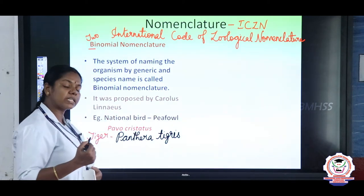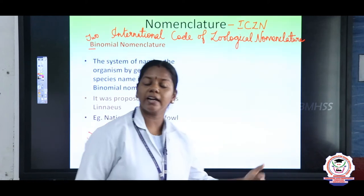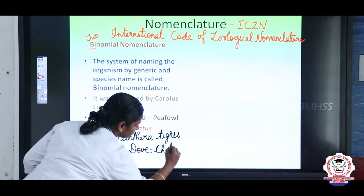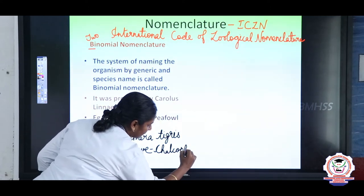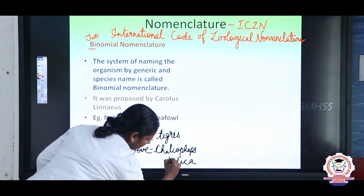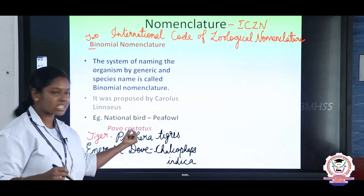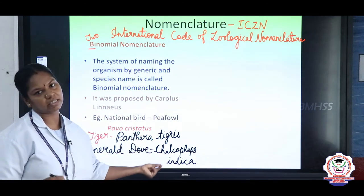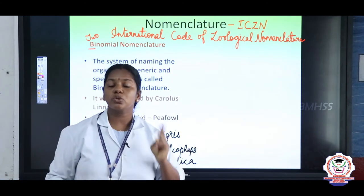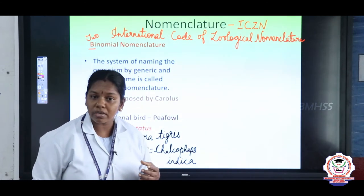Our state bird of Tamil Nadu is the emerald dove, called 'maragadapura' in Tamil. Its scientific name is Chalcophaps indica. So we have: Pavo cristatus for peacock, Panthera tigris for tiger, and Chalcophaps indica for emerald dove. The process of naming an organism by two names is binomial nomenclature. Now let us study the other type — trinomial nomenclature.